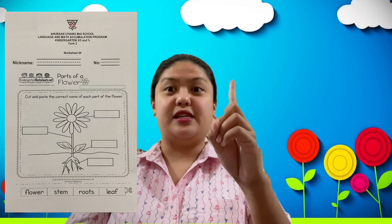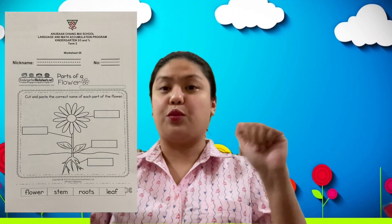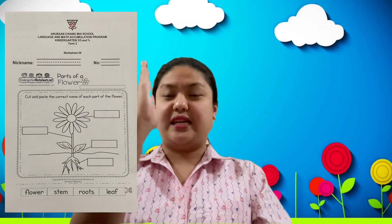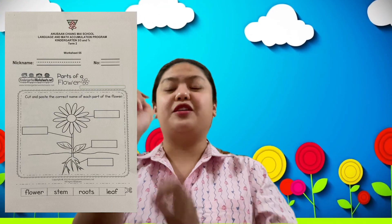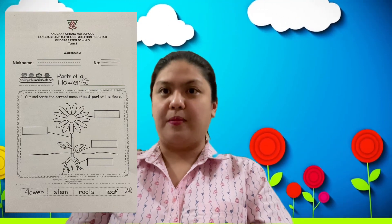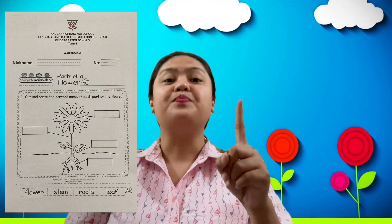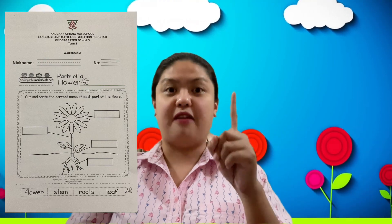First it starts with a small seed, then there are roots, then the stem, then there's a leaf, and after the leaf there's a flower. We will answer worksheet number 55 — okay kids, you write it in your paper.